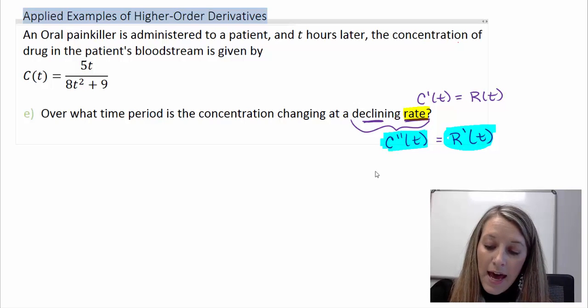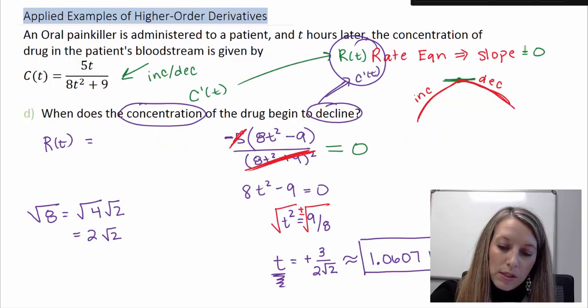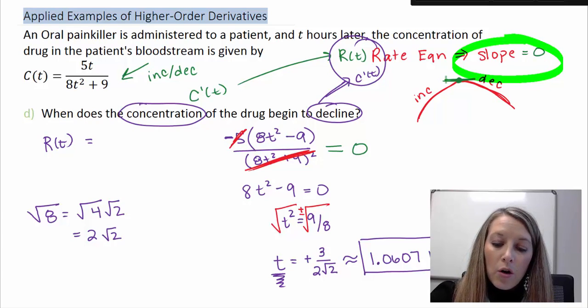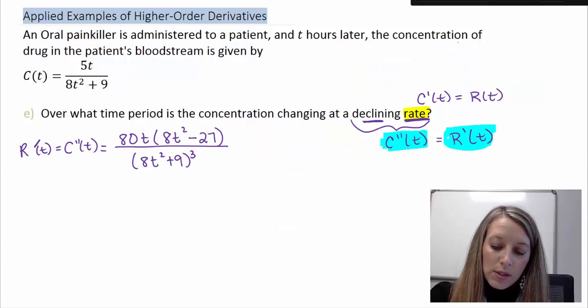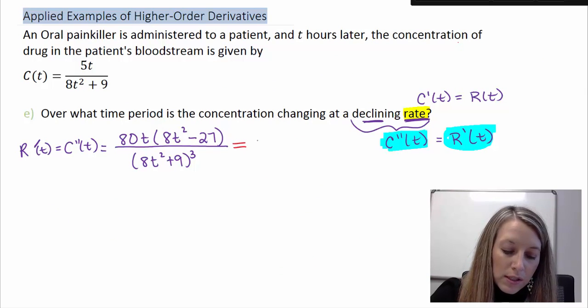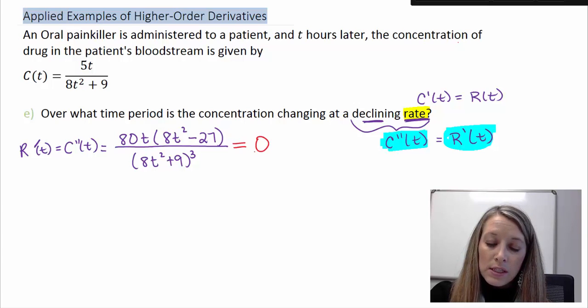We did compute that in part b, and so I just have copied and pasted it from there. So for the same reason that we set this equation equal to zero here, because that's going to be where our graph changes directions from increasing to decreasing or from decreasing to increasing, we are going to set this derivative equal to zero here, because that's where our first derivative, our rate equation, is going to be switching directions, increasing to decreasing or decreasing to increasing.